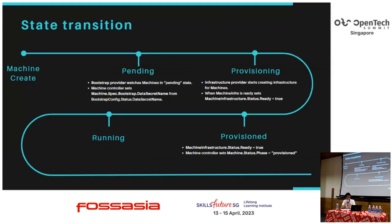Here is the state transition when you create a machine. When a machine is created, the bootstrap provider watches the machine in pending status and the machine controller sets the bootstrap data from the bootstrap config. In the next status — provisioning — the infrastructure provider starts to create infrastructure for the machine. When the machine infrastructure ready field is set, the machine controller sets the machine status phase to provisioned.